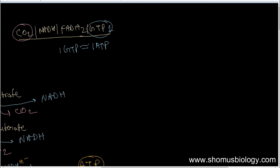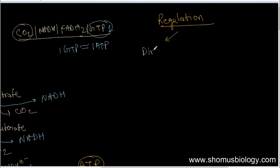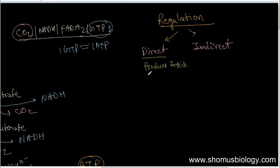Now let's talk about the regulation of the TCA cycle. Regulation can be direct or indirect. Direct regulation includes product inhibition or allosteric effects of ATP and ADP. Indirect regulation is through the obligatory coupling of oxidation with phosphorylation.